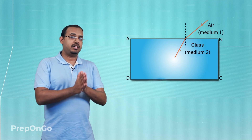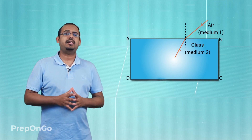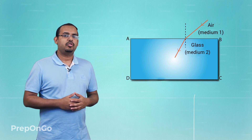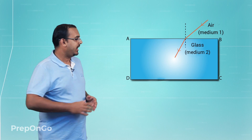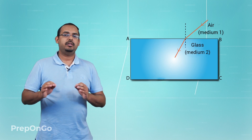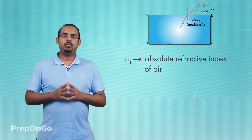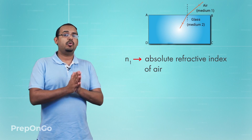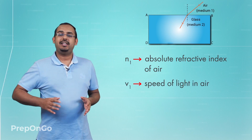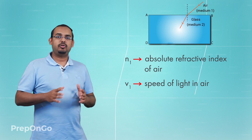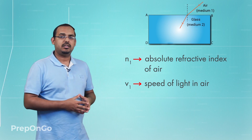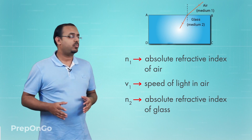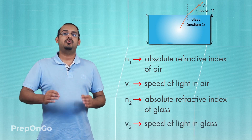Let us understand this with an example. Consider a glass slab with light travelling from air to glass. Air becomes medium 1 and glass becomes medium 2. The absolute refractive index of air is denoted n1 and the speed of light in air is v1. Similarly, the absolute refractive index of glass is n2 and the speed of light in glass is v2.